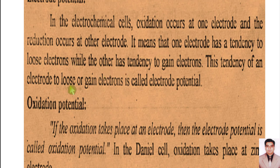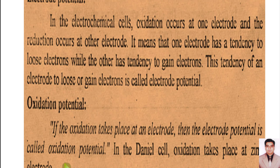If we define oxidation potential: if oxidation takes place at an electrode, then the electrode potential is called oxidation potential. In the galvanic cell, oxidation takes place at the zinc rod. So the potential of the zinc electrode is called oxidation potential.